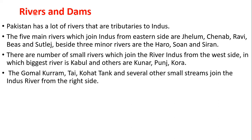After partition, in 1960, there were huge tensions between Pakistan and India over the water system. The World Bank facilitated an agreement — the Indus Waters Treaty — under which Pakistan was given rights over the upper three rivers: Indus, Jhelum, and Chenab, while India took control of Ravi, Sutlej, and Beas, which flow into Indian Punjab.